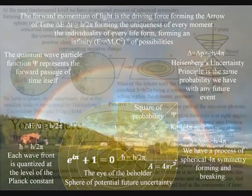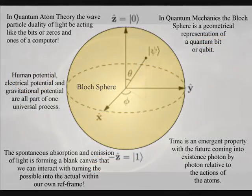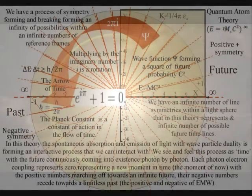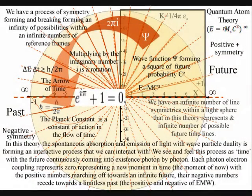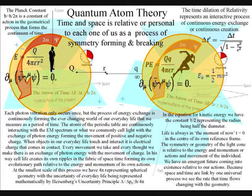At the most fundamental level, this is a process of spherical symmetry forming and breaking, with the electron being the most spherical object in the universe. We have an infinite number of line symmetries within a sphere that in this theory represents an infinite number of potential future timelines. As part of an interactive process, this forms an infinity of possibilities and opportunities.